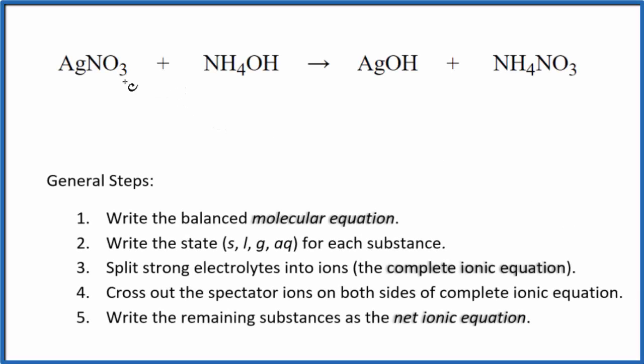In this video we'll write the balanced net ionic equation for AgNO3 plus NH4OH. We have silver nitrate and ammonium hydroxide. The first thing we need to do when writing balanced net ionic equations is balance the molecular equation. This is our molecular equation and everything's already balanced here.